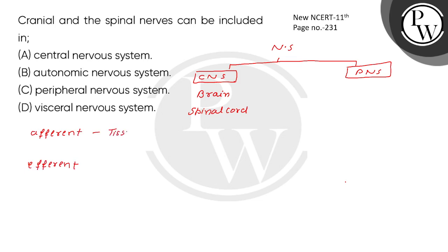Afferent goes from tissue and organ to the central nervous system. It contains sensory information.